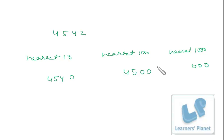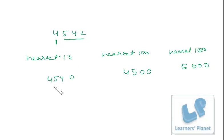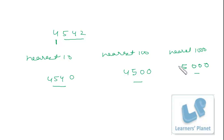Then for rounding to nearest one thousand, first of all put up three zeros and see the last three digits. If the last three digits are more than 500, then you have to add one - so four and one is five. Now you see the same number: rounding to nearest ten gives one answer, rounding to nearest hundred gives another, and rounding to nearest one thousand gives another. Each answer is different, so be very clear about what you are rounding to.